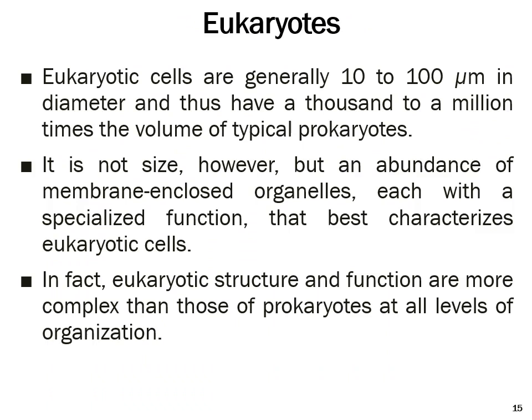Next we move on to eukaryotes. Eukaryotic cells are generally bigger cells — they are ten to one hundred micrometers in diameter, which may be a thousand to a million times the volume of a prokaryote. However, it is not the size but the abundance of membrane-enclosed organelles, each with a specialized function, that best characterizes eukaryotic cells.